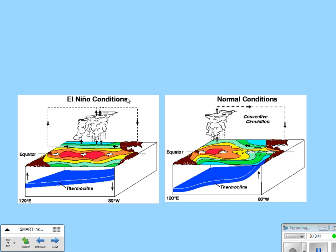Looking at El Niño conditions, remember from the oceanography unit about the coast of Peru and the anchovies — when El Niño happened, there was no more upwelling. Here we have the thermocline, that drastic drop in temperature, which is not as drastic during El Niño. During El Niño, the convection cycle occurs in the middle of the ocean with warm temperatures there and the thermocline is less steep. Under normal conditions, convection happens more along the west side of the ocean basin and the thermocline is much steeper. Also, during El Niño the water moves to the east, whereas under normal conditions water moves to the west with the convection current rotating clockwise.